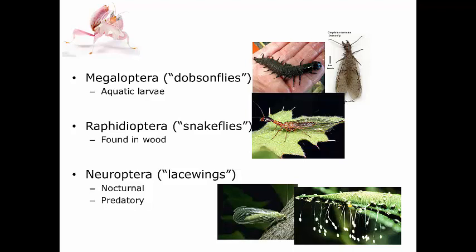Raphidioptera are characterized by an elongate pro-thoracic region. Looking at the snake fly: you've got your head, and then this whole section is the thorax — the wings are on the meso- and metathorax, so this first pro-thoracic segment is very long. This is what gives them the name 'snake fly,' that elongate pro-thorax giving them their snake-like look. The females also have very long, sclerotized ovipositors — which look a lot like a stinger, but these don't sting you. They use them to deposit eggs into crevices in bark or rotting wood.